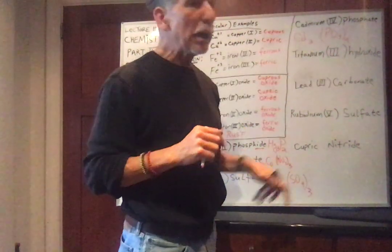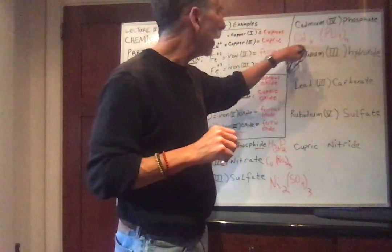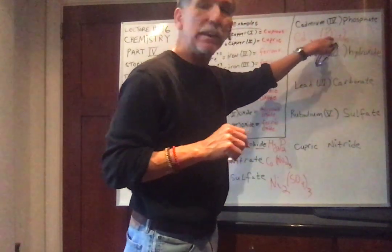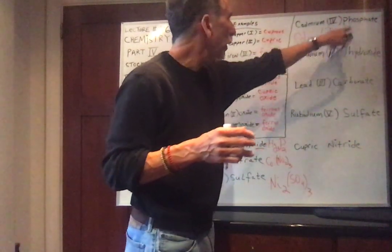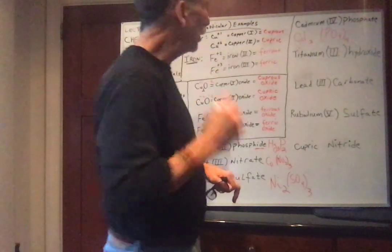So in one of these molecules, notice there's 3 cadmium atoms, 4 phosphates, and 16 oxygens. You see, 4 is outside the parentheses.